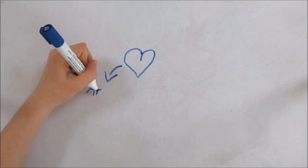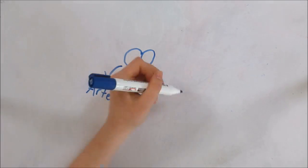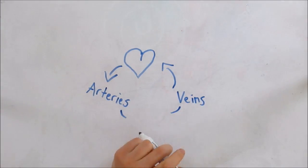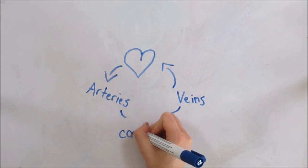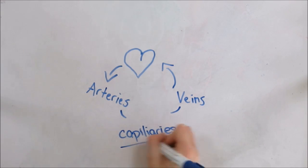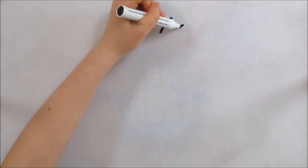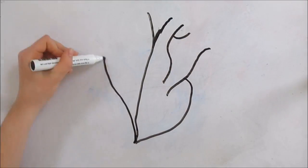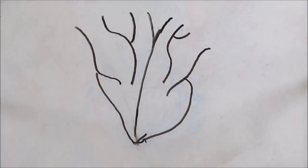Arteries carry blood away from the heart. The veins, blood flow ends when the arteries start. That's the difference between the both of these, their only connection is the capillaries.